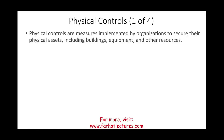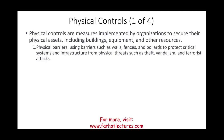Physical controls are measures implemented to secure physical assets — protecting your building, equipment, resources, and computers. You create barriers between those assets and the outside world. Barriers can include walls, fences, doors, secure doors, and bollards to protect critical systems and infrastructure from physical threats such as theft, vandalism, and terrorist attacks.